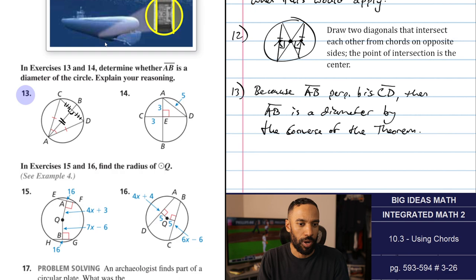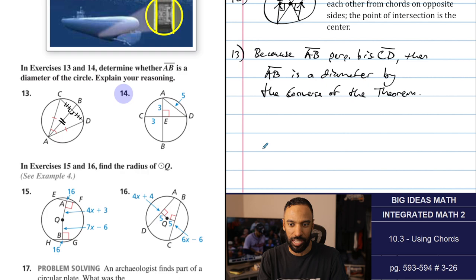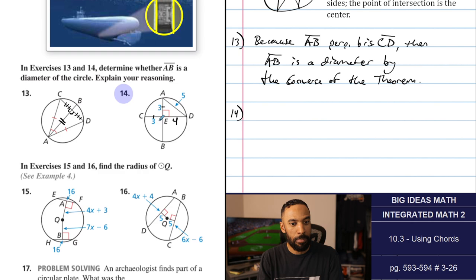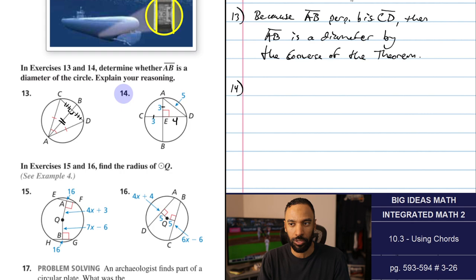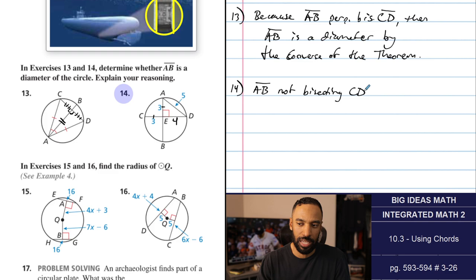Number 14: we have the two parts as 3 and 3, with a right angle shown and 5, so the other side is 4 by the Pythagorean theorem. If this side is 4, then AB is not bisecting CD despite being perpendicular to it. Therefore AB is not bisecting CD, so AB is not a diameter.